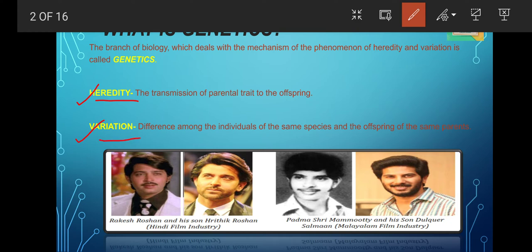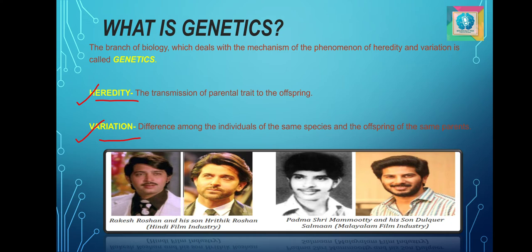Second is variation. Variation is the difference between the young ones of the same parents, or the difference between various individuals belonging to one species. Variation is responsible for the diversity within the population and it leads to evolution by introducing new phenotypic characters to the species. For example, the colour of the eye, skin, hair, the dimples which we see on the face — these are due to variation passed on within the species.